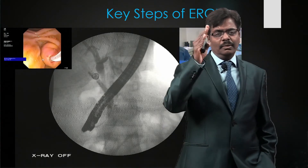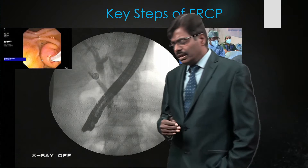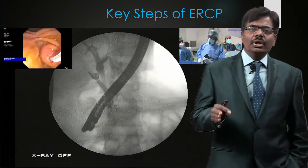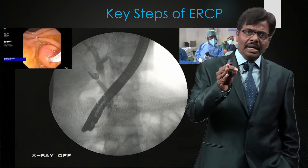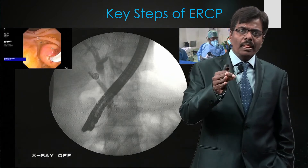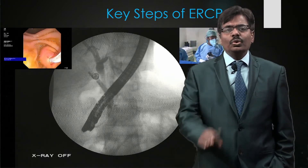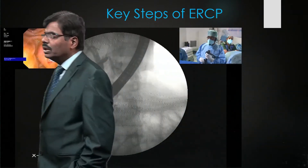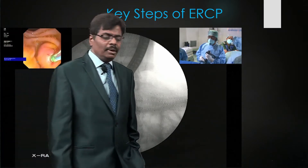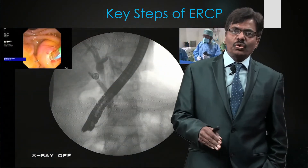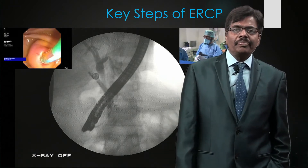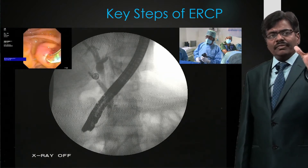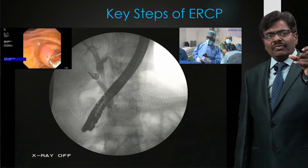To gauge duct size, use your scope as a reference — the therapeutic scope is 10.8 mm. If the duct is slightly smaller than the scope, it is around 9.5 to 10 mm in diameter. There is some degree of magnification, so use the scope diameter as your reference. You can see how I position myself and the view obtained inside as I ask my staff nurse to pull the wire taut.